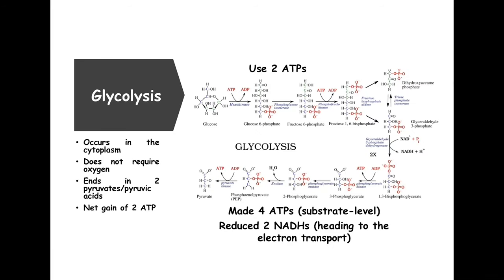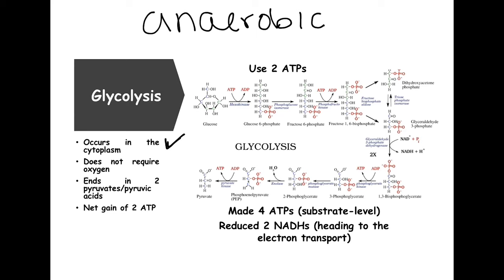So this is glycolysis. I want to mention that this is anaerobic in nature — it does not require oxygen. So whether or not you have oxygen, you can still go through glycolysis. It occurs in the cytoplasm of the cell; all the other steps occur in the mitochondria, but this occurs in the cytoplasm. The end products from one glucose molecule entering glycolysis are two pyruvic acids, and we have a net gain of two ATPs.